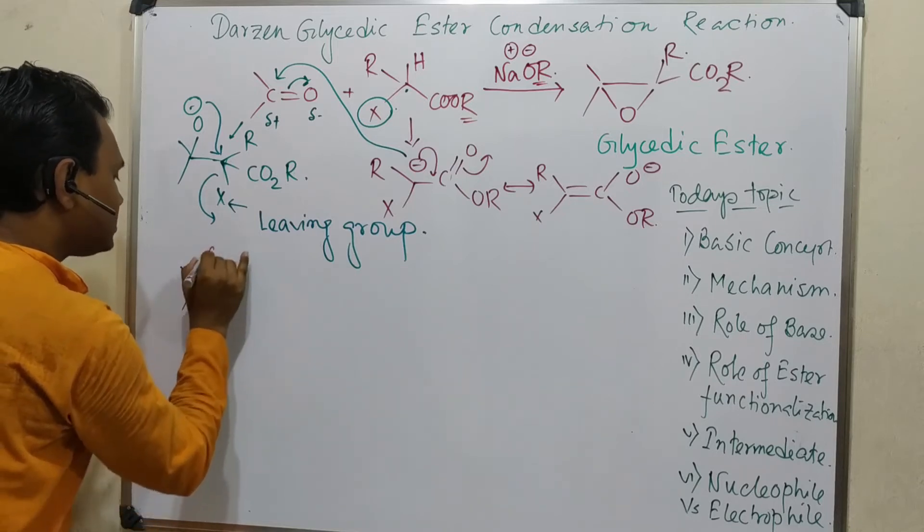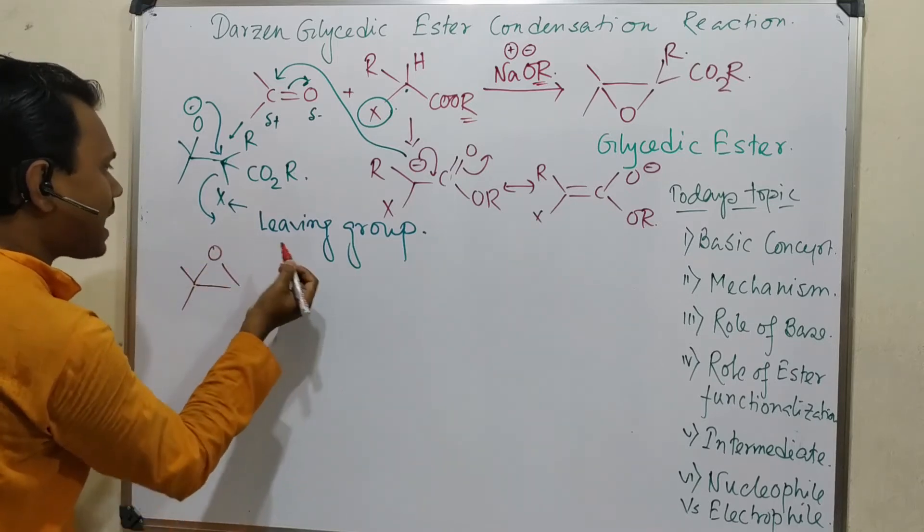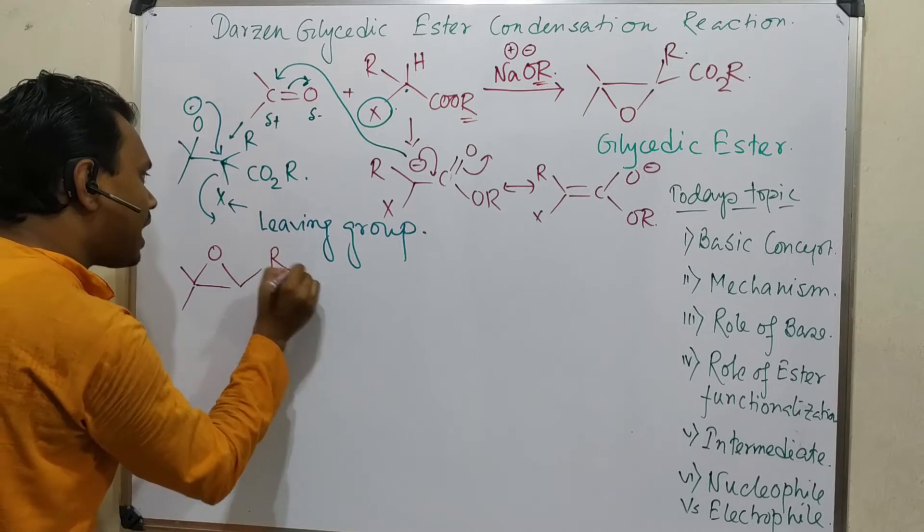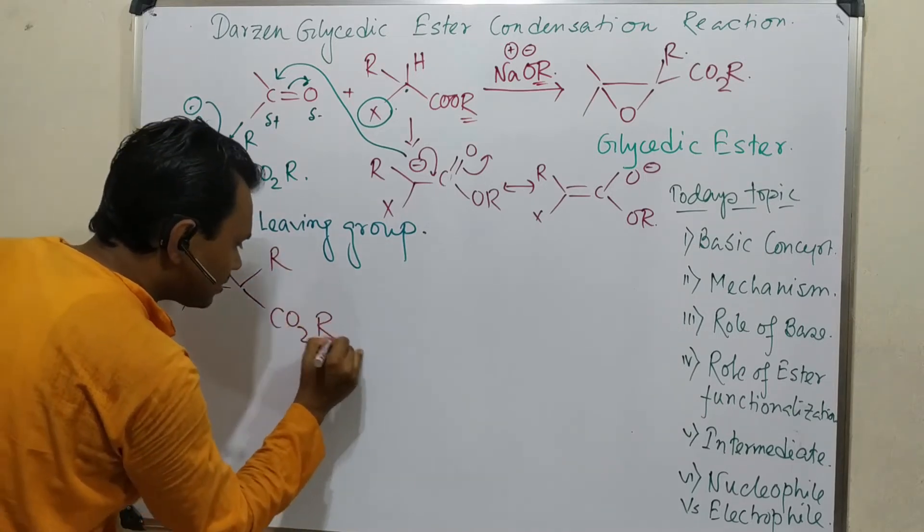So this is the oxygen here, and halide is left. So this is R and this is CO2R.